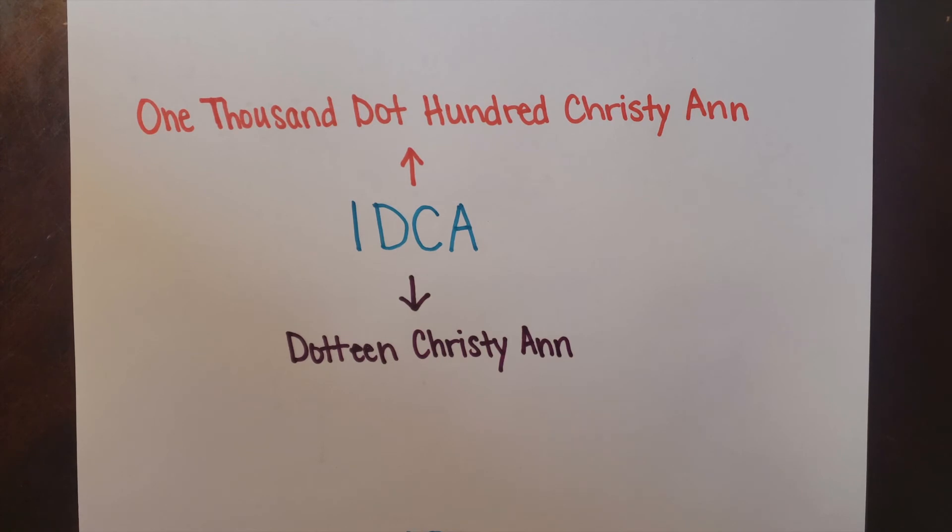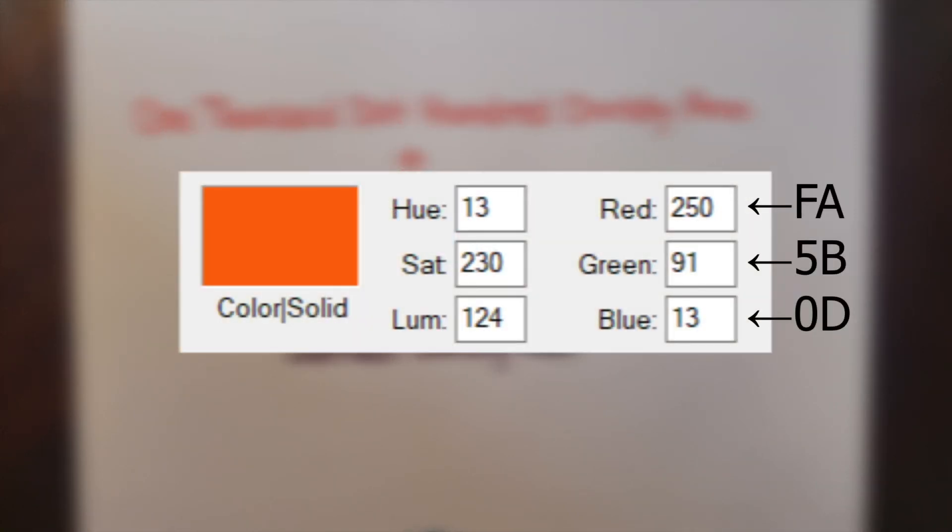Oftentimes in hexadecimal, two characters can be used to represent one thing from a set of 256 objects. For example, this shade of orange could be described as having Frosty Ann Red, 50-Bet Green, and Dot Blue.